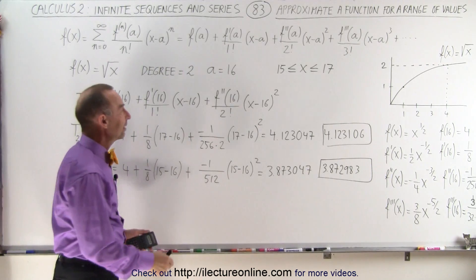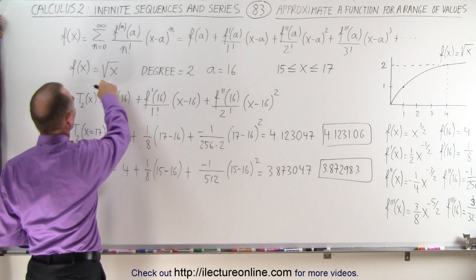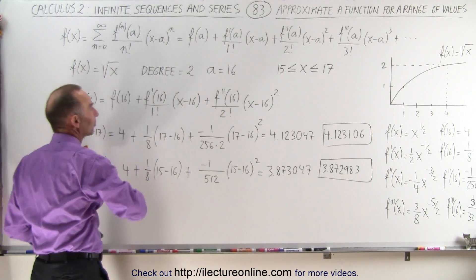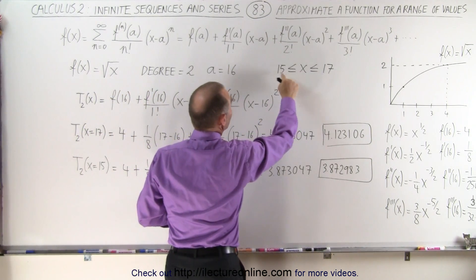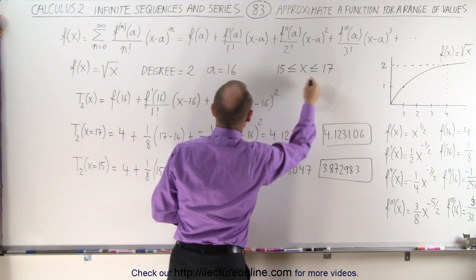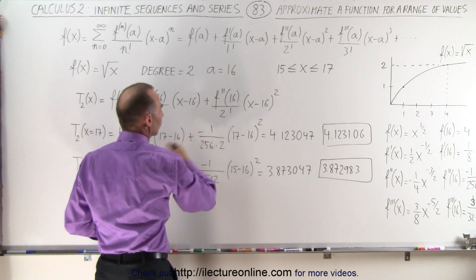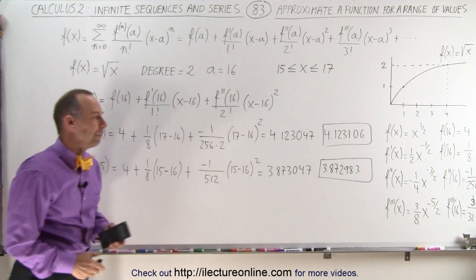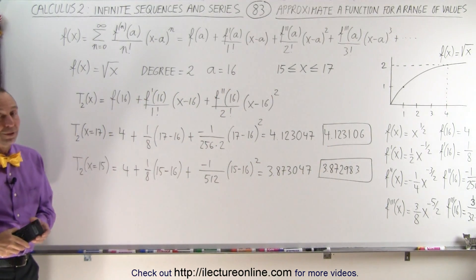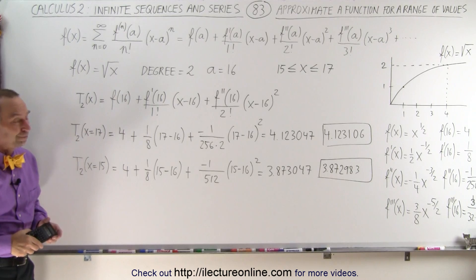And so now we realize that the square root of the function, square root of x, can be evaluated between x equals 15, x equals 17 by a very short Taylor series expansion, getting values very close to the actual value. Now you can see the power of the Taylor series expansion. That's how it's done.